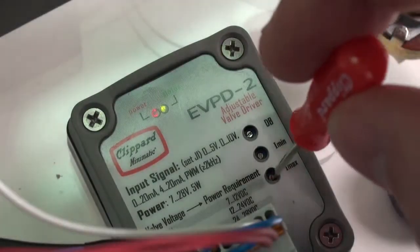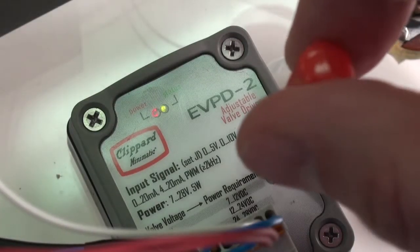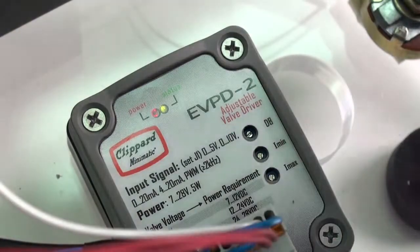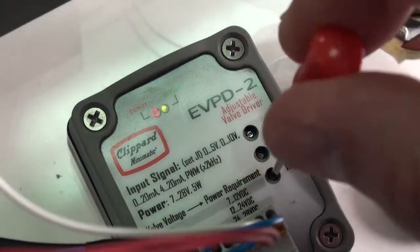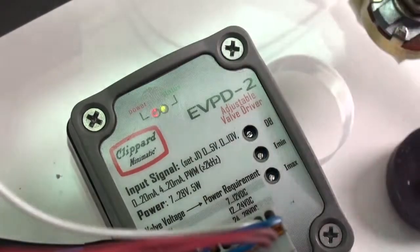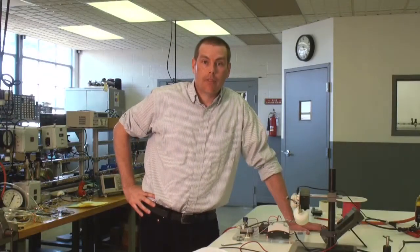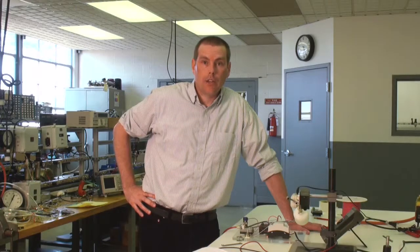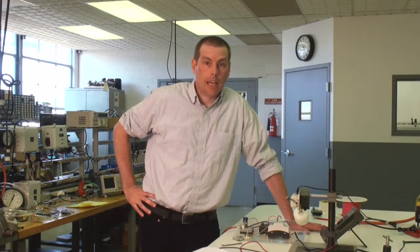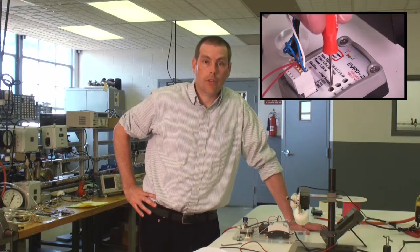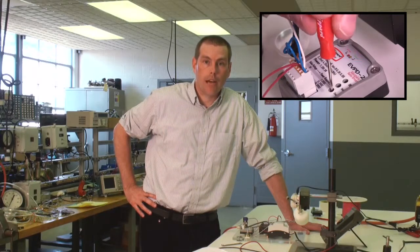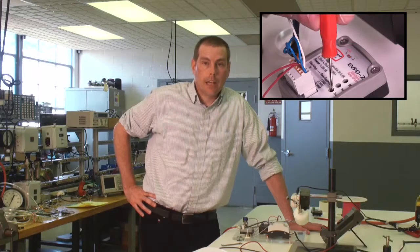Finally, we need to adjust the maximum current. For most applications, that will probably be the max rated current of the valve, and this value should never be exceeded. In some cases, you may find that the max flow of the valve is more than what you need in your application. In that case, you can use the I-max adjustment of the driver to limit the amount of flow through the valve.